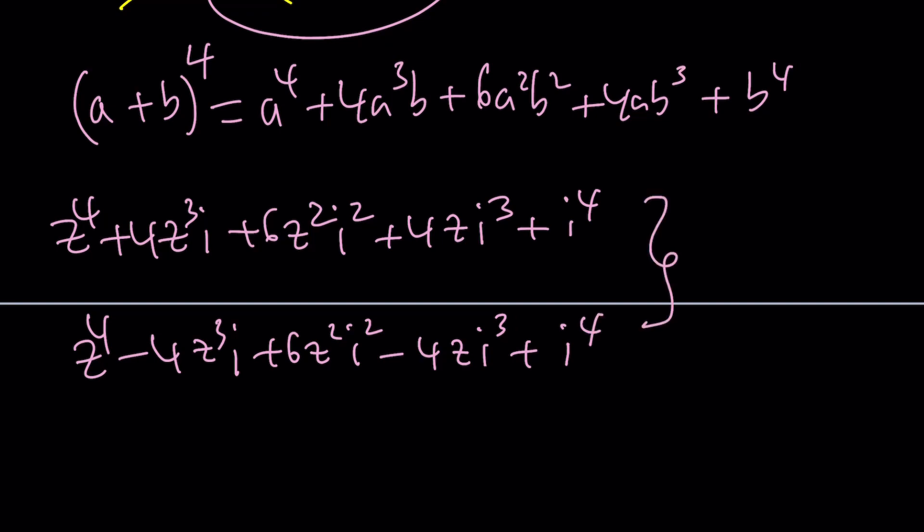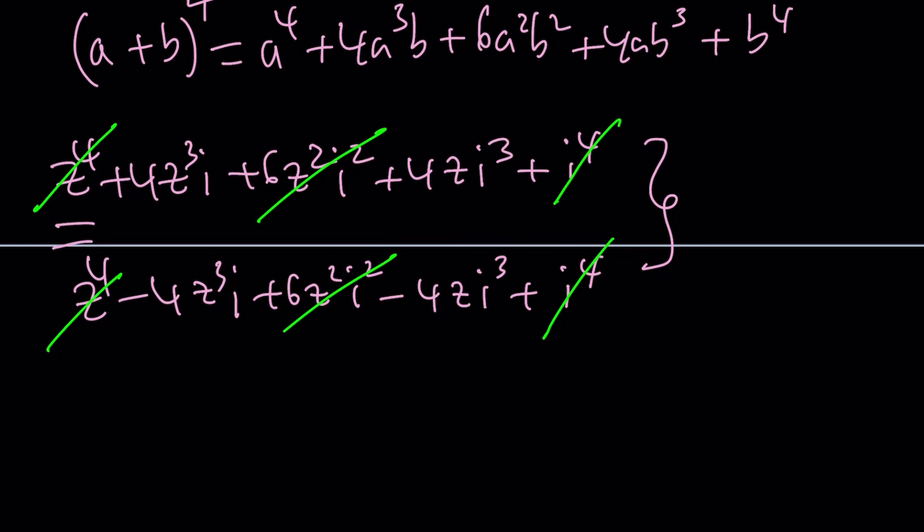Notice that these two things are equal. They're not being added. They're equal to each other. So by setting these equal to each other, you're going to be able to cancel some terms out. Like z to the fourth is going to cancel out. And then 6z squared i squared is going to cancel. You don't have to worry about evaluating it. And i to the fourth is going to cancel out. Now we get 4z cubed i, which is going to give you 4iz cubed. And i cubed is negative i. So I'm going to write it as minus 4iz equals negative 4iz cubed plus 4iz.